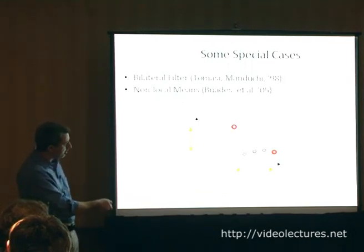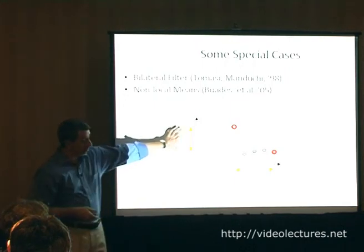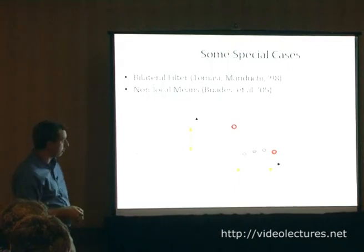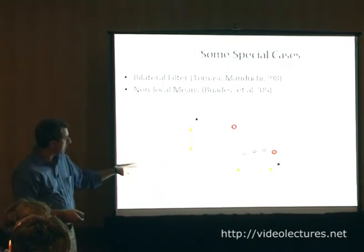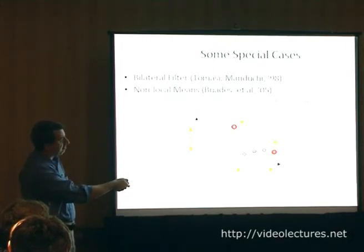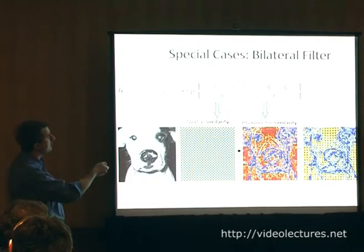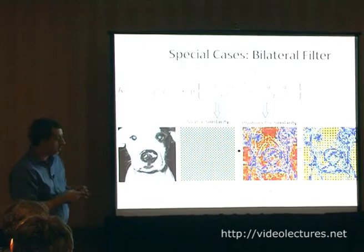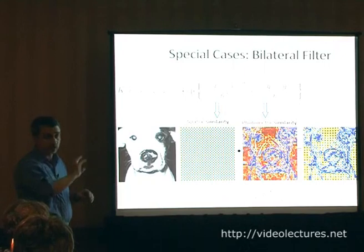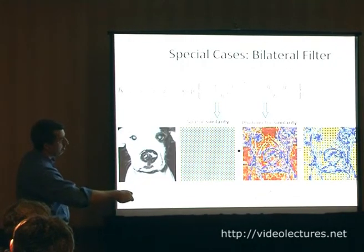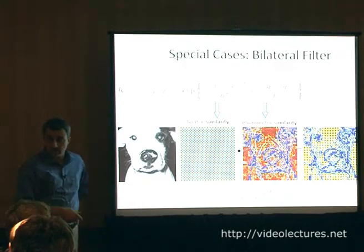If you not only include the spatial distance but also the photometric distance — the gray value difference between pixels — you get the bilateral filter and non-local means. These two things are very similar in principle: they pick a Gaussian for the photometric kernel and a Gaussian for the spatial kernel, and literally multiply these, so you're measuring the Euclidean distance between points in a joint spatial-photometric space. Here's a quick example of the bilateral filter: this term is the spatial similarity, this term is the photometric similarity, and these two get multiplied point-by-point to give the arrangement of kernels used for constructing the filter.